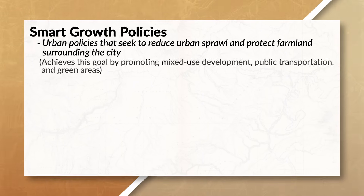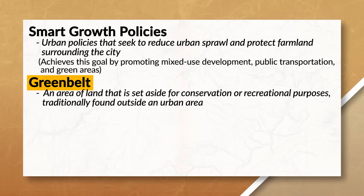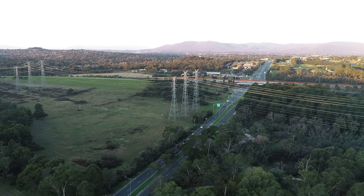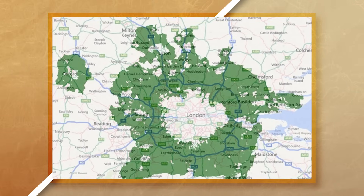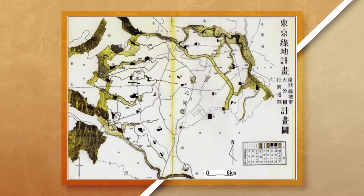I want to highlight the difference between smart growth policies and a concept known as new urbanism. Smart growth policies are focused around keeping an urban area compact and walkable — essentially putting the brakes on urban sprawl and stopping the urban area from expanding into the surrounding countryside. Smart growth policies can lead to the creation of green belts, which are undeveloped areas of land surrounding an urban area, intentionally left underdeveloped to preserve the environment, limit urban sprawl, and provide a buffer between urban and rural areas. Examples include the London Green Belt, estimated at over a million acres, and the Tokyo Metropolitan Green Belt, which protects green spaces and agricultural lands surrounding Tokyo.